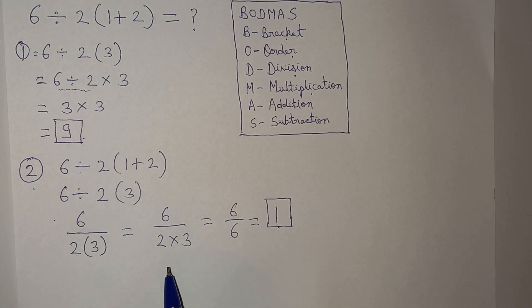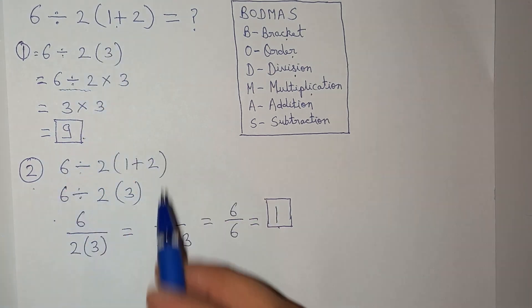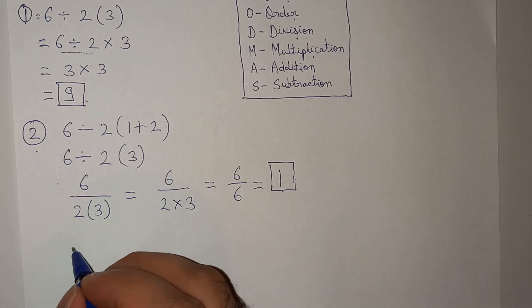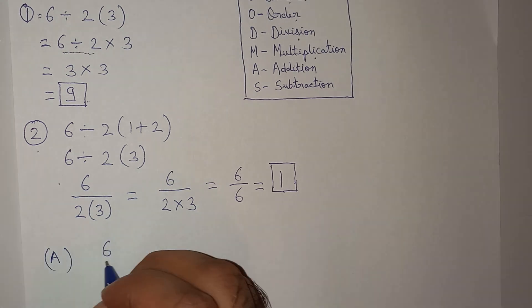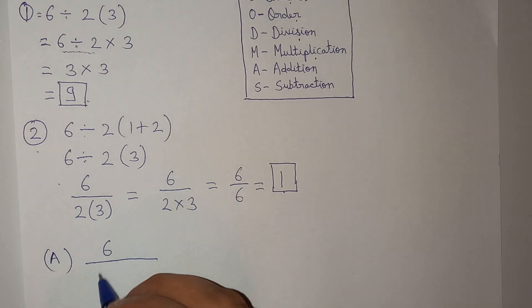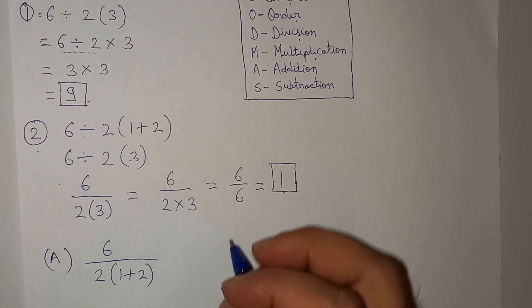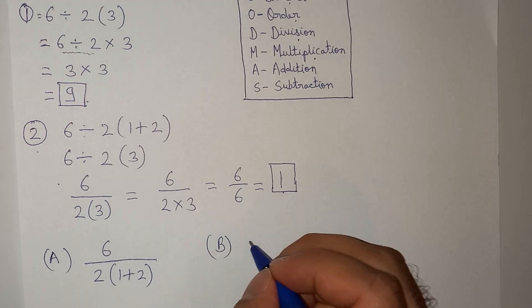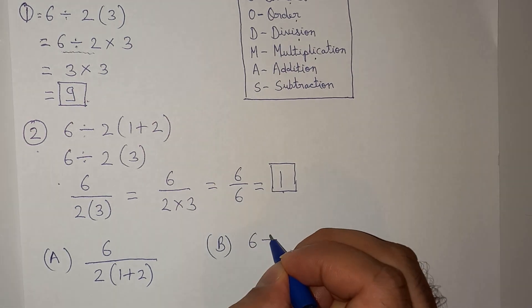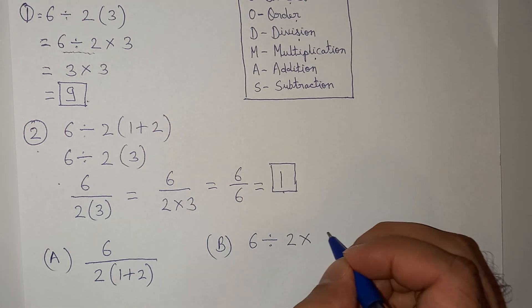I think the correct answer is that the question is poorly written. The question should have been written as 6 ÷ [2(1+2)] or the question should have been written as (6 ÷ 2) × 3.